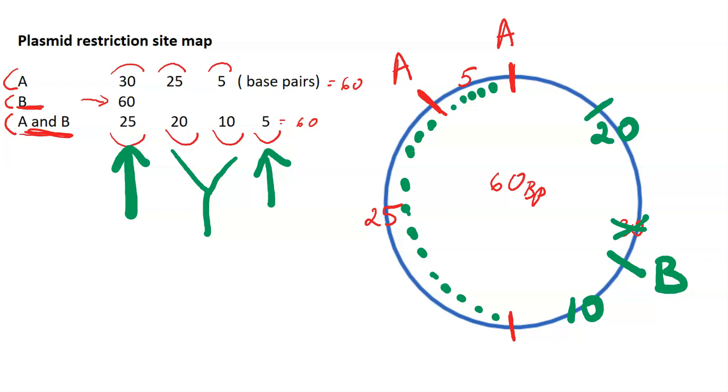However, the order that these restriction sites occur on this plasmid is not going to change. Notice we start at 12 o'clock and move clockwise. We have a restriction site by enzyme A followed by B. This one is A, and the last one is also A. So A, B, A, A.